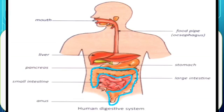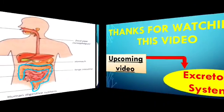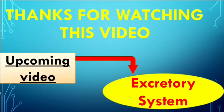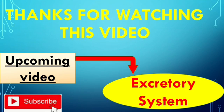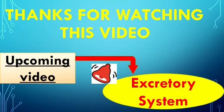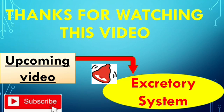So children, the digestive system is a very important part of our body — without it we can't get the essential nutrients needed for our proper growth and good health. This was all about the digestive system. In the next upcoming video we will learn about the excretory system. Please subscribe to my channel and hit the bell icon so you are the first to get notifications of upcoming videos. Bye children!